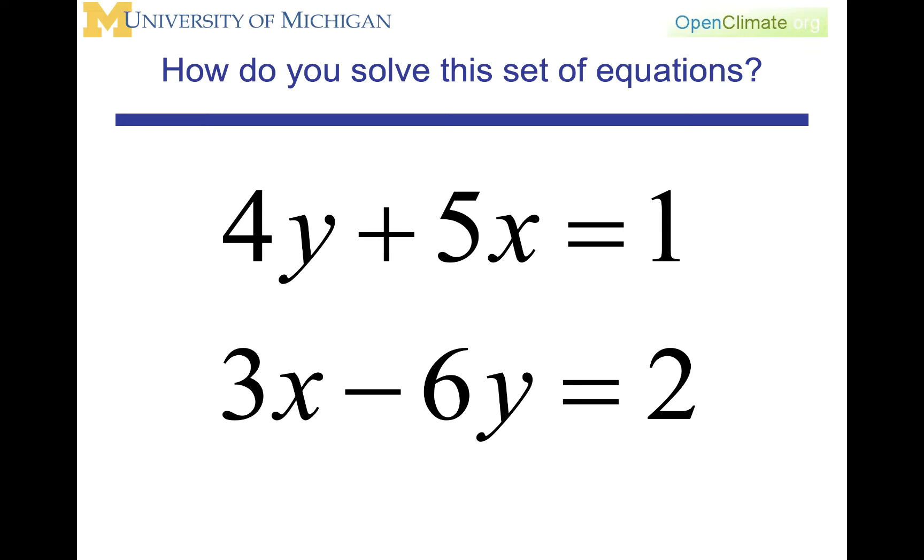The basic idea of this equation is you want to eliminate some variables, and you're going to do that by multiplying this equation by 3 and this equation by 5, and then you can subtract out the x's and get an equation that's only in y. Alternatively, you could multiply this equation by 6, this equation by 4, add them up, eliminate the y's, and you'd have an equation in x.